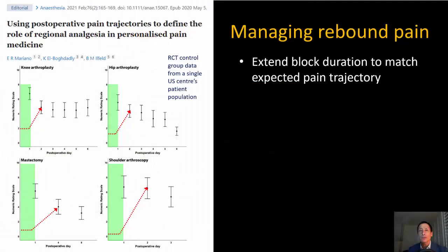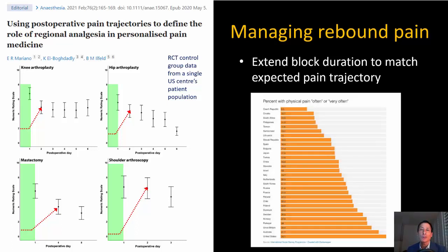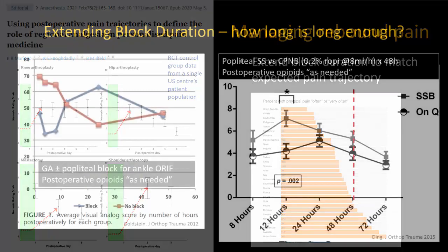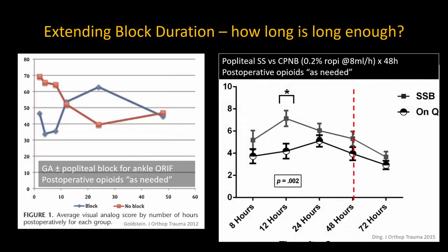Another way to attenuate the impact of rebound pain is to try and better match block duration to the expected pain trajectory of the operation. Unfortunately, these trajectories remain poorly defined for the most part, and any effort to do so is also complicated by the fact that pain experience is subject to both cultural and geographical variation. Nevertheless, in most surgeries associated with moderate to severe pain, this intensity usually lasts beyond 24 hours and maybe as long as 48 or even 72 hours before it starts to drop off. This 48 to 72 hour window may be the sweet spot in most surgeries.